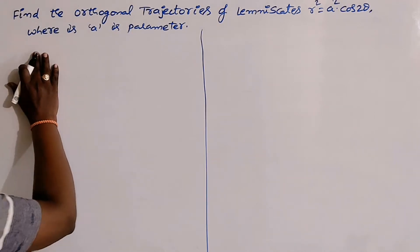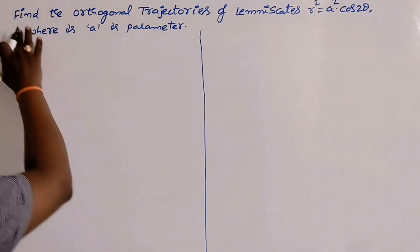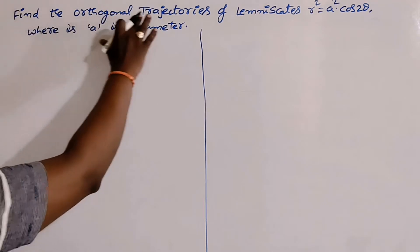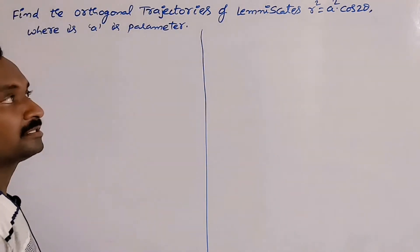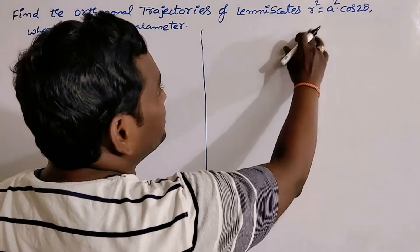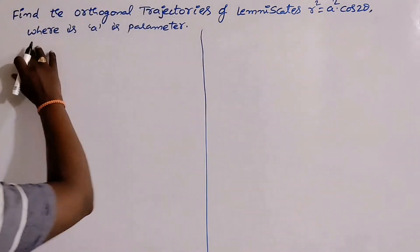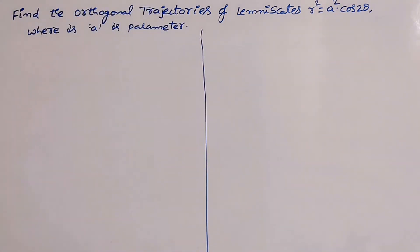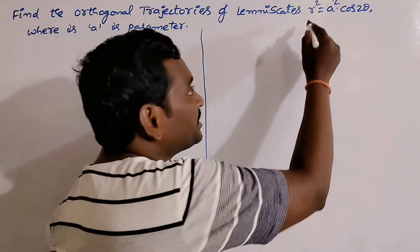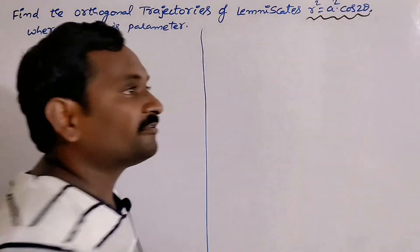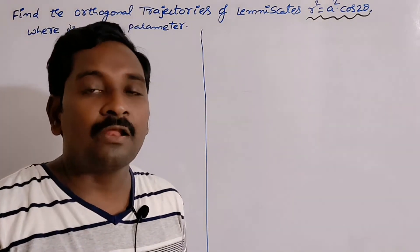This is the next problem on orthogonal trajectories. Find the orthogonal trajectories of lemniscates. The name of the curves is lemniscates, which is r² = a²·cos2θ, where 'a' varies as the parameter. Clearly, by seeing the equation, the given family is in polar coordinates.